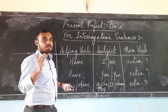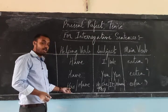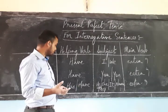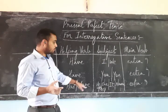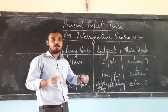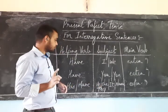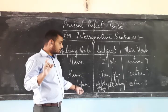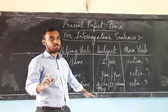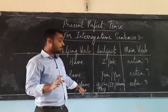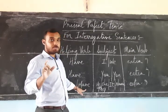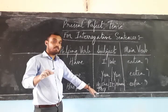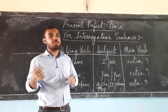But for third person we use both 'has' and 'have'. 'Has' is used with he, she, it, and the name of one person. 'Have' is used with third person only when the subject is plural — either 'they' or the names of more than one person.